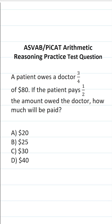This arithmetic reasoning practice test question for the ASVAB and PIKET says: a patient owes the doctor three-fourths of $80. If the patient pays one half of the amount owed the doctor, how much will be paid?